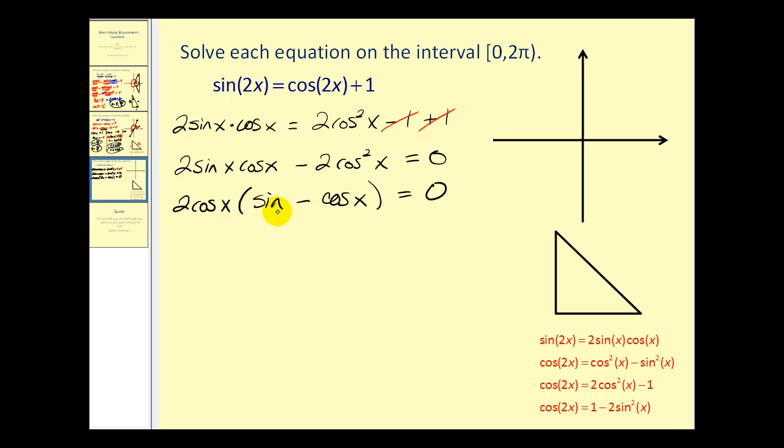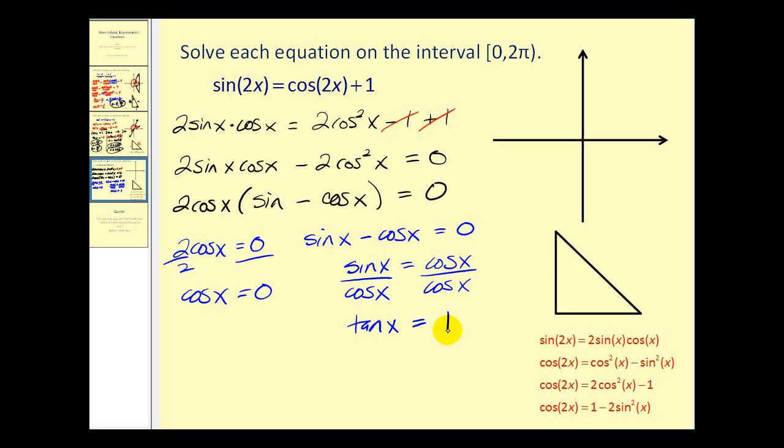Now normally, this is going to be a problem having two different trig functions. But let's go ahead and see what we can do with it. So we'll set each of these factors equal to zero. Dividing by two, we have cosine x equals zero. Now over here, what I'm going to do is move the cosine x to the other side. And now I'm going to divide both sides by cosine x. Remember, sine x over cosine x is tan x. And of course, cosine x divided by cosine x is one. So we need to find the angles on this interval where cosine x equals zero and tan x equals one.